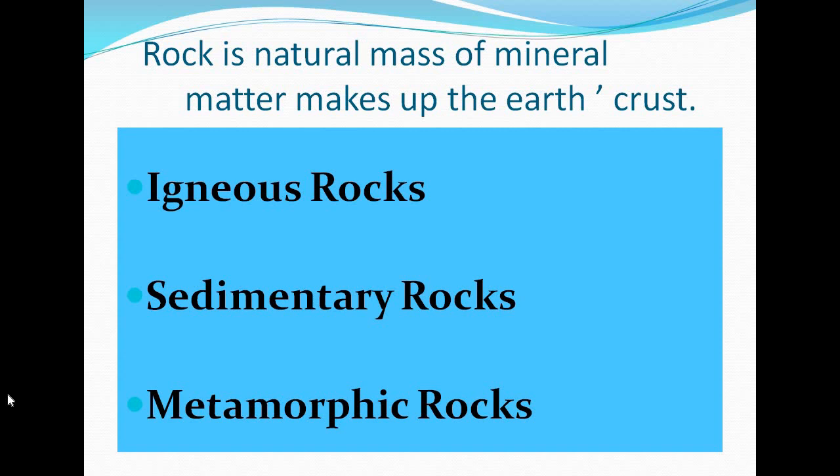Sedimentary rocks are the rocks which are formed with the sediments — meaning broken pieces of rocks. These sediments are transported and deposited by wind and water on the oceanic crust, so sedimentary rocks are formed on the oceanic crust. Third, metamorphic rocks: when igneous and sedimentary rocks are subjected to heat and pressure, they change into metamorphic rocks. These are the three types of rocks.